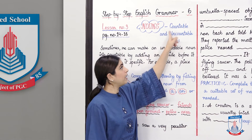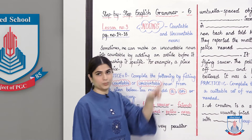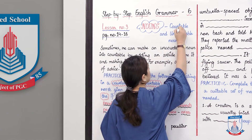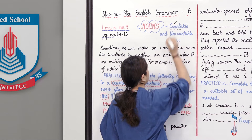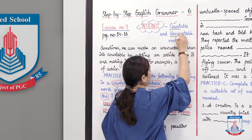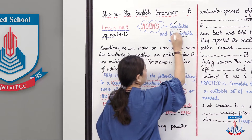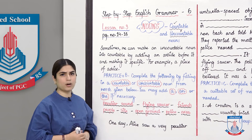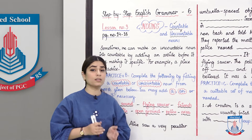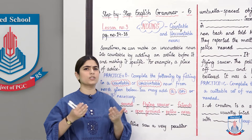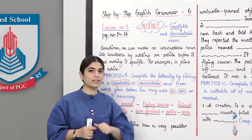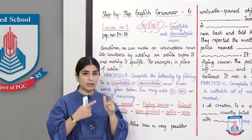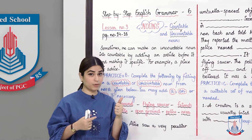Countable and uncountable nouns. A countable noun is one that can be counted, and an uncountable noun is one that cannot be counted. For example, tables — you can tell how many tables there are: 1, 2, 3, 4. Numbers can be counted.